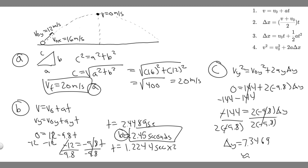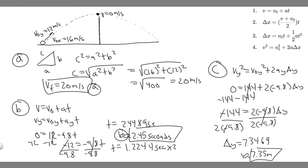So delta-Y is approximately 7.35 meters — that's the maximum height obtained by the ball, and that's your answer to Part C. To summarize: Part A is 20 meters per second, Part B is 2.45 seconds, and Part C is 7.35 meters. Hopefully you found this useful.